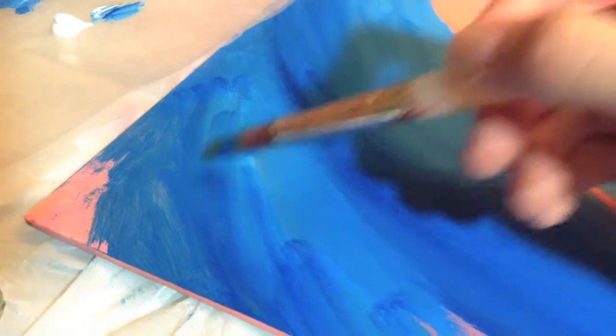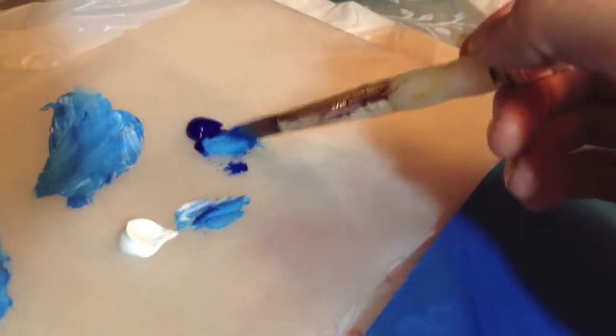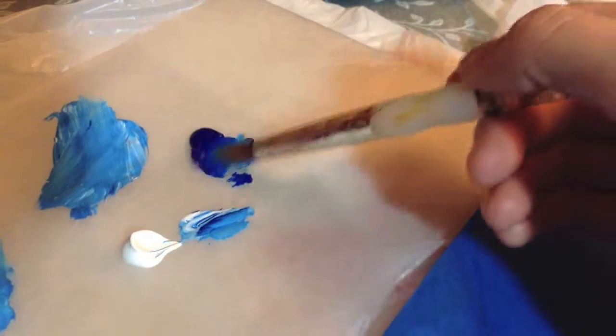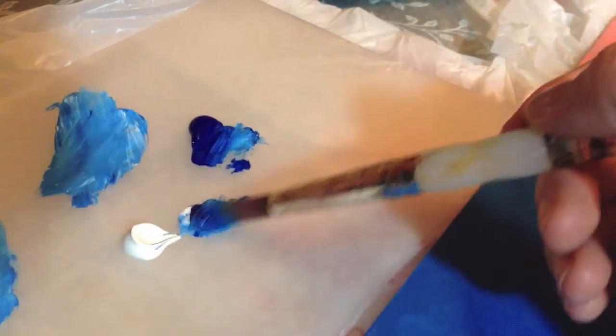I think it's thinned out because I had my brush in water to rinse off what I had before. So that's probably why it's a little thinned out. We're gonna grab a little bit more paint here and work this in to what we're doing.